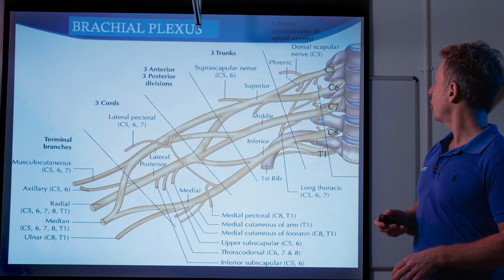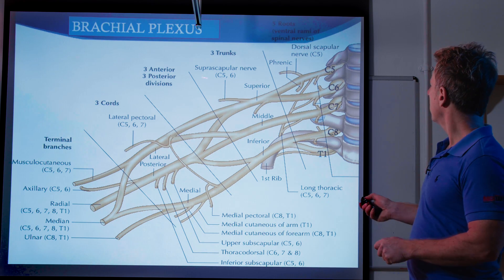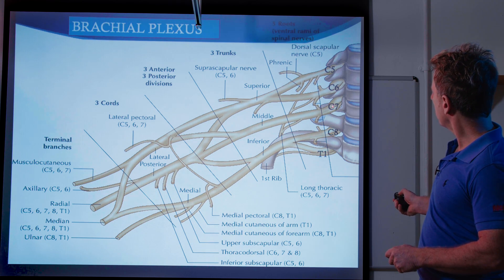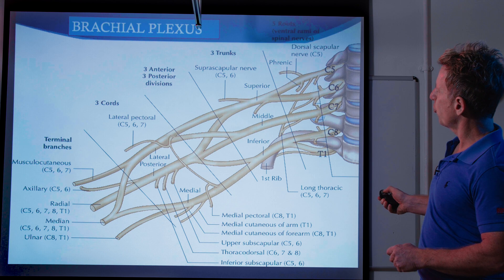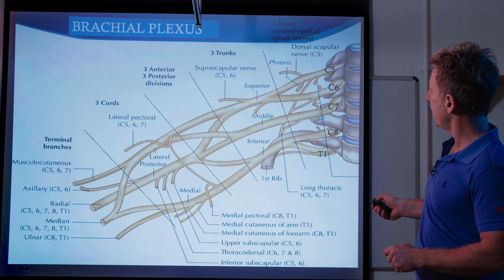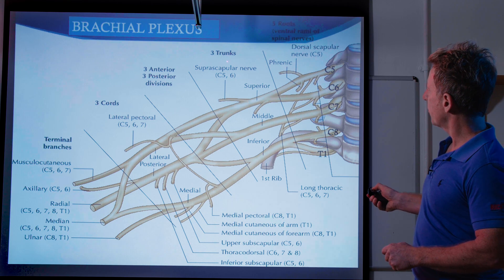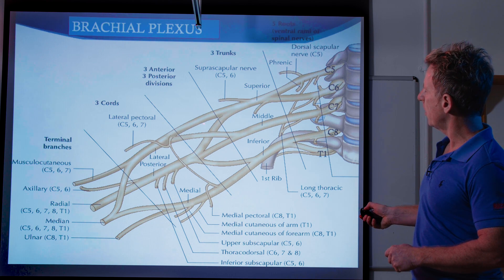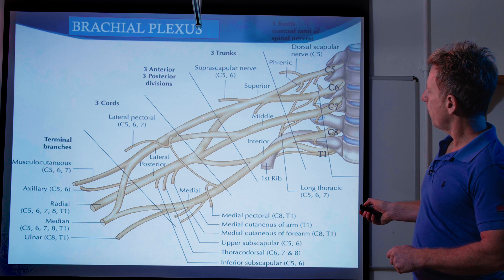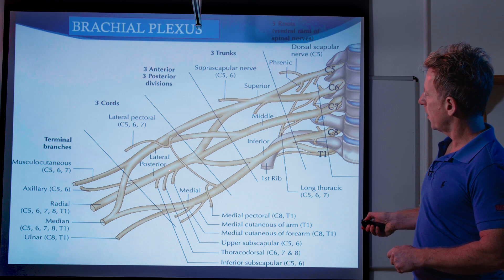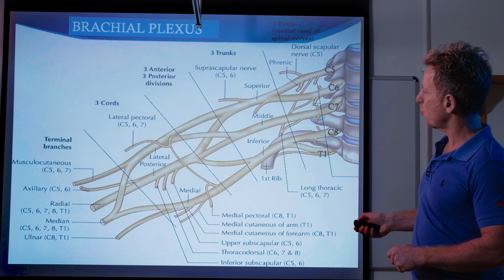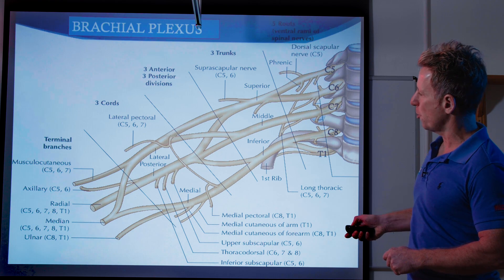Have a look at the picture here. You've got the nerve roots — five nerve roots between C5 and T1 as part of the brachial plexus. As it comes out, the five roots become the three trunks: the superior, middle, and inferior trunk. Then the trunks become divisions, splitting into three anterior and three posterior. Then they become the lateral, posterior, and medial cord, and eventually the terminal branches.